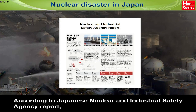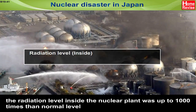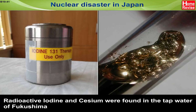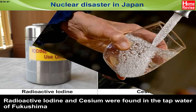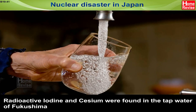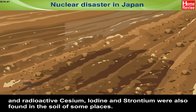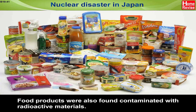According to the Japanese Nuclear and Industrial Safety Agency report, the radiation level inside the nuclear plant was up to 1000 times the normal level, and outside the plant was up to 8 times the normal level. Radioactive iodine and cesium were found in the tap water of Fukushima, and radioactive cesium, iodine, and strontium were found in the soil of some places. Food products were also found contaminated with radioactive materials.